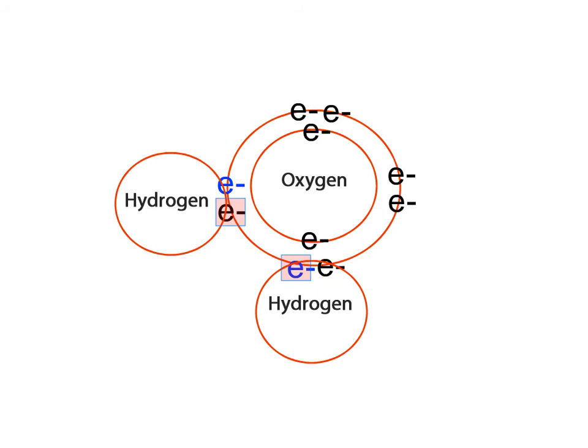Oxygen needs 2 electrons to fill its valence electron shell. So, it will share electrons with 2 hydrogen atoms to become stable.